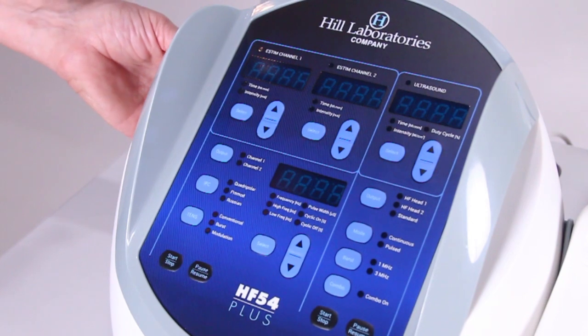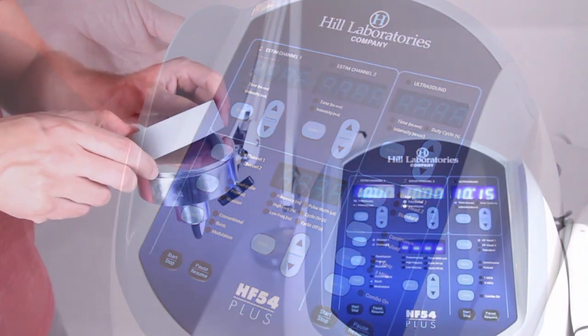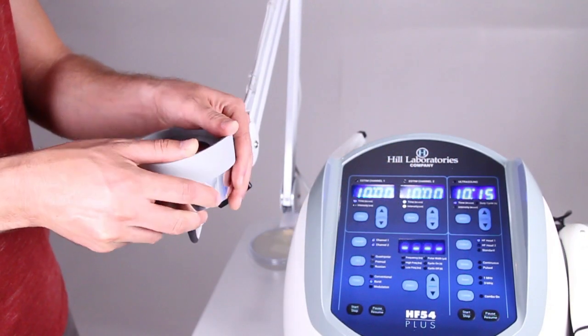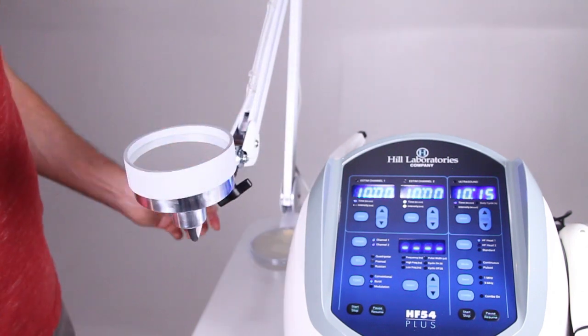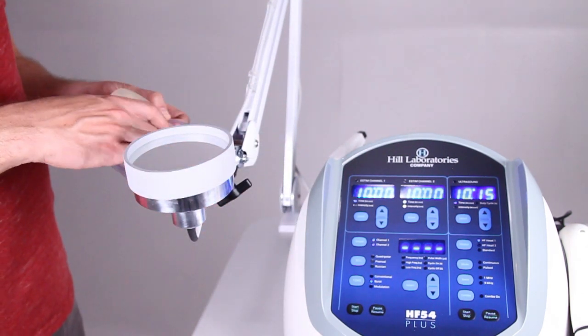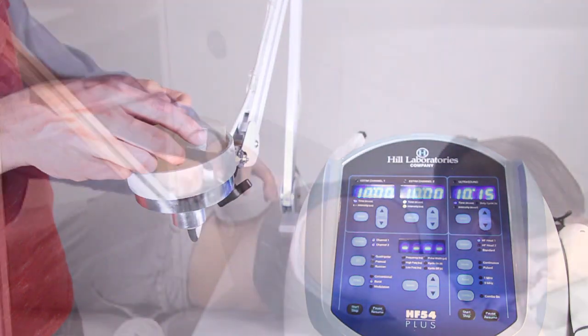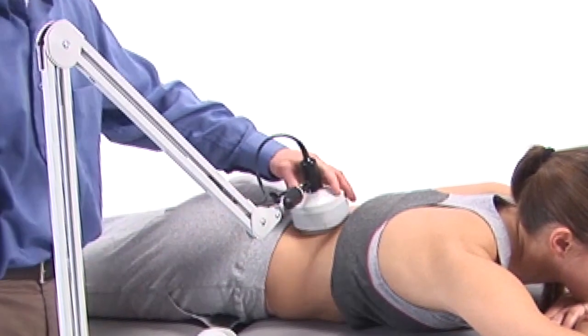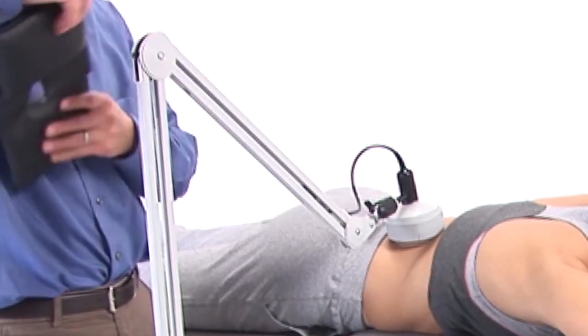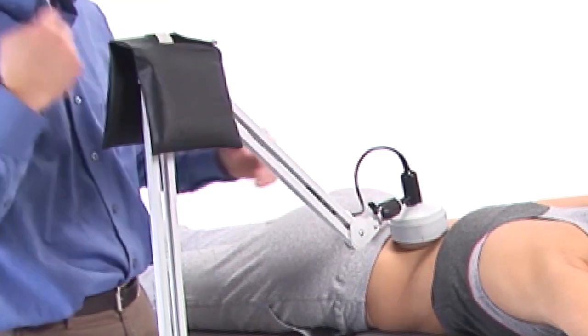Setup for the HF 54 is designed for speed and accuracy. Turn on the unit using the power switch. Place the retainer ring around the sound head as shown, and then place the gel pad into the retainer ring. Position the sound head on the desired area of your patient.